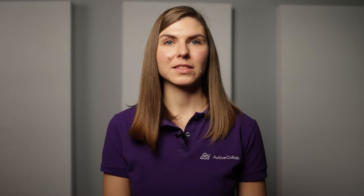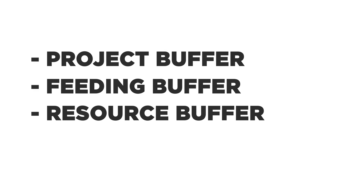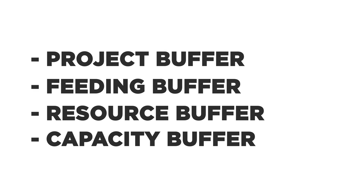Buffers. There is a lot of uncertainty around projects, and Critical Chain uses buffers to protect the project timeline and remove them. There are four types of buffers: project buffer, feeding buffer, resource buffer, and capacity buffer.